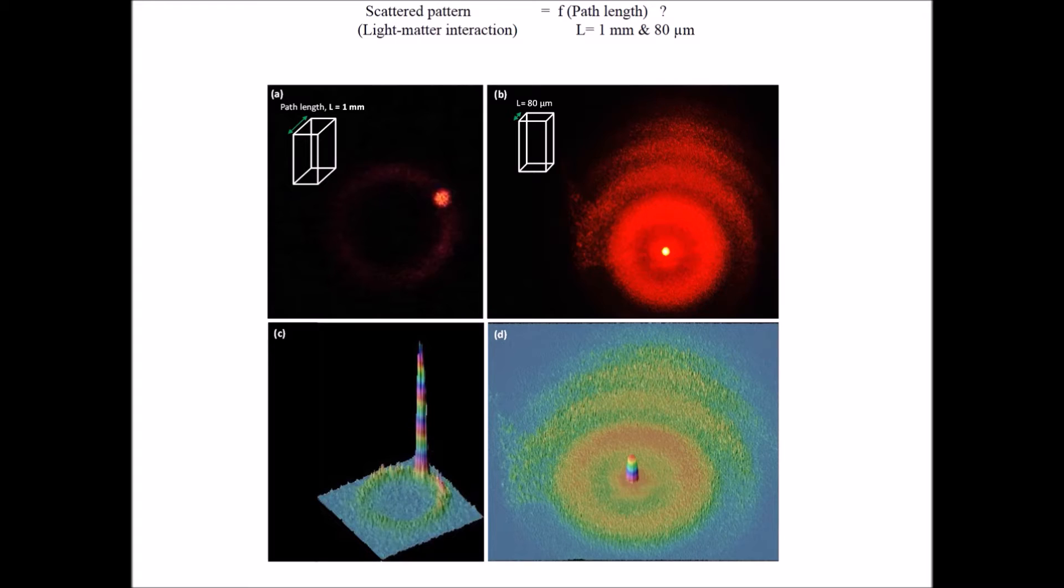Next, we demonstrate that the scattering from the cylindrical surface of the field-induced chains and columns is the reason for the observation of a single conic-like ring for the longer path length of 1 mm.